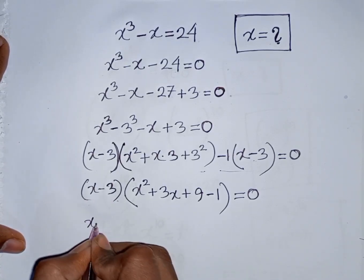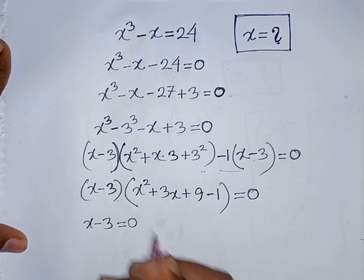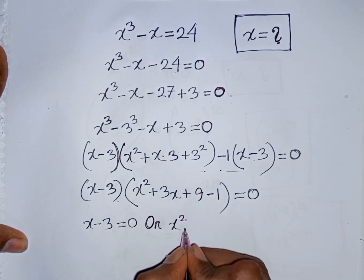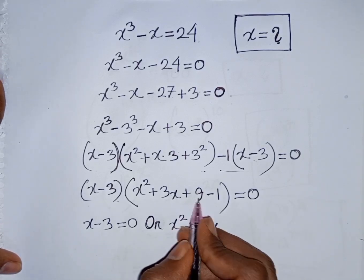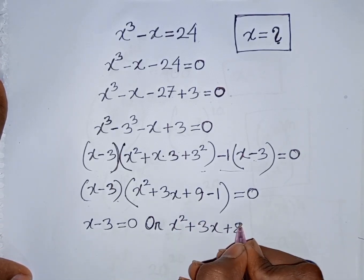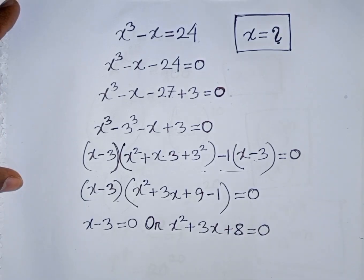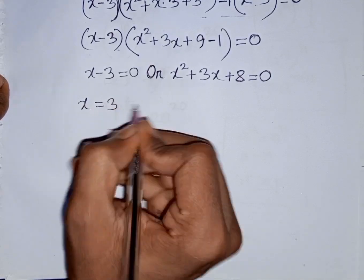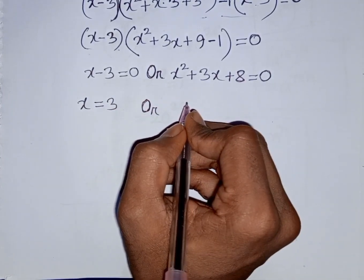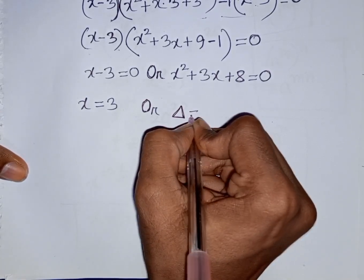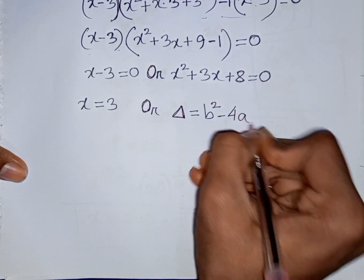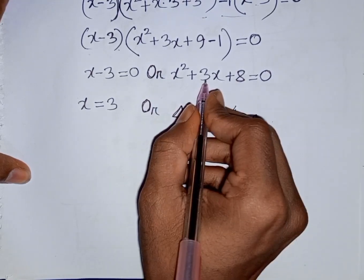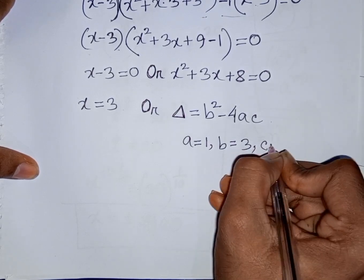Now we can write x minus 3 = 0, so x = 3. Or here you can apply the discriminant formula. Delta equals b² minus 4ac. Here a = 1, b = 3, and c = 8.